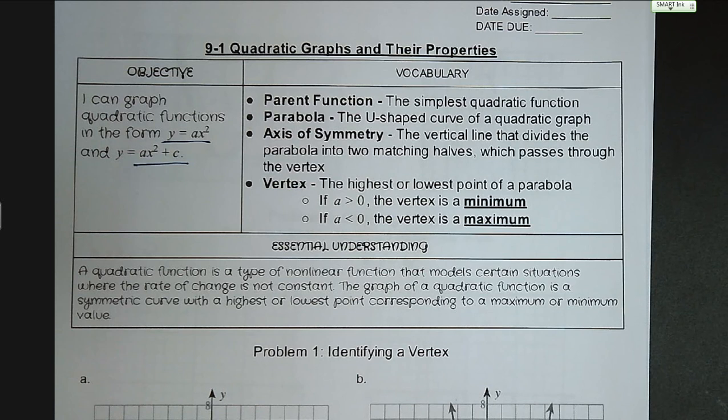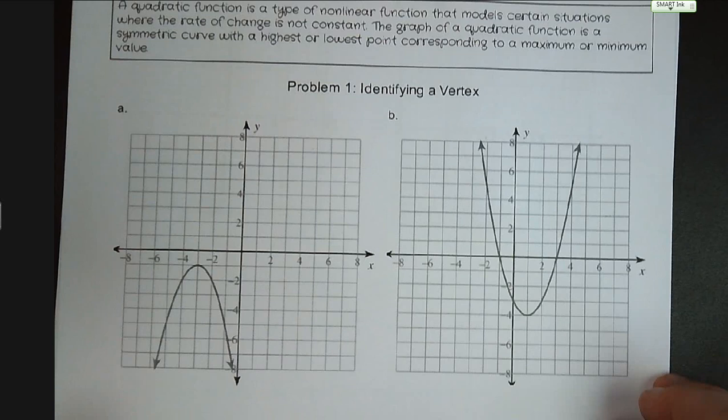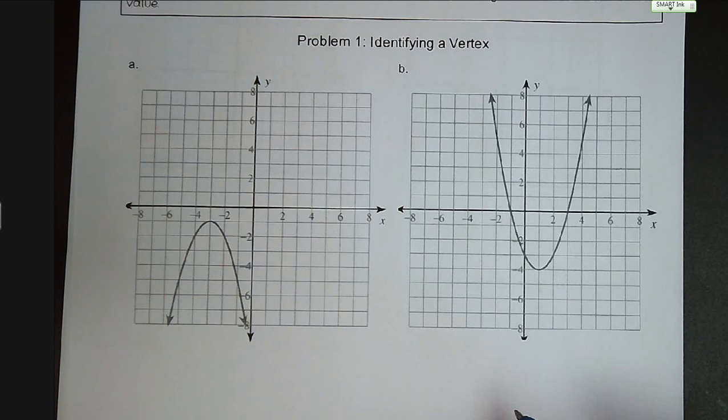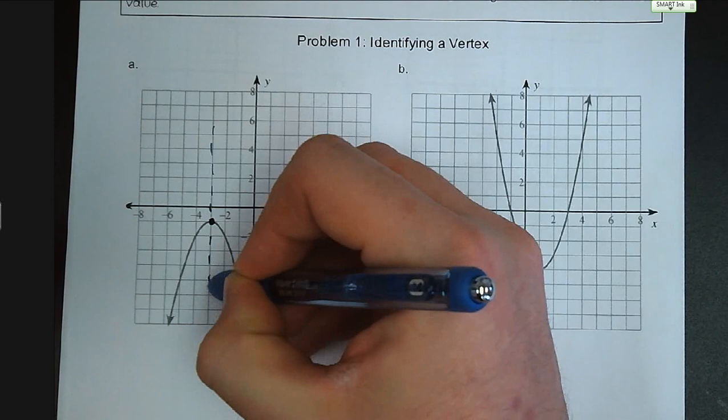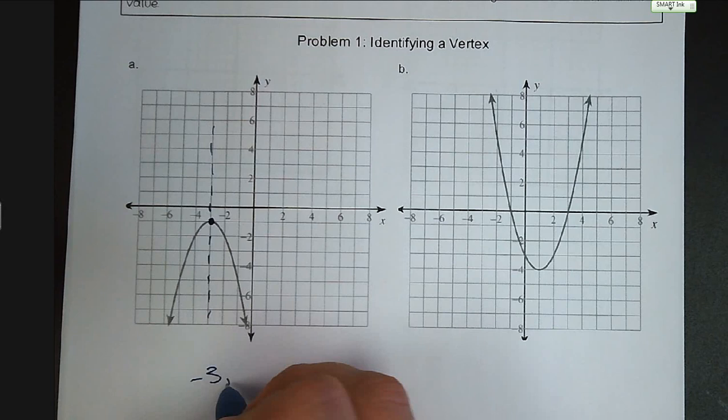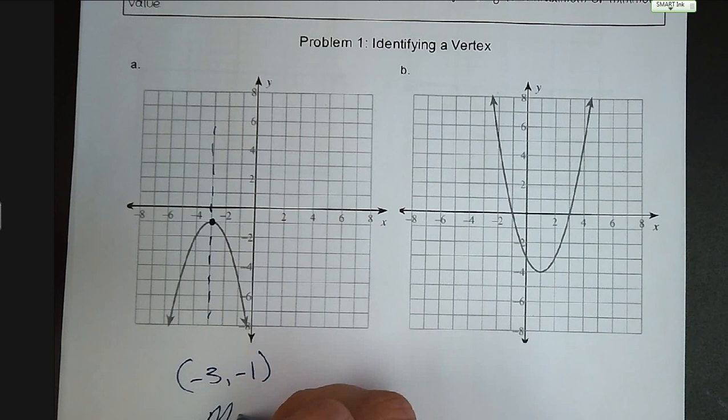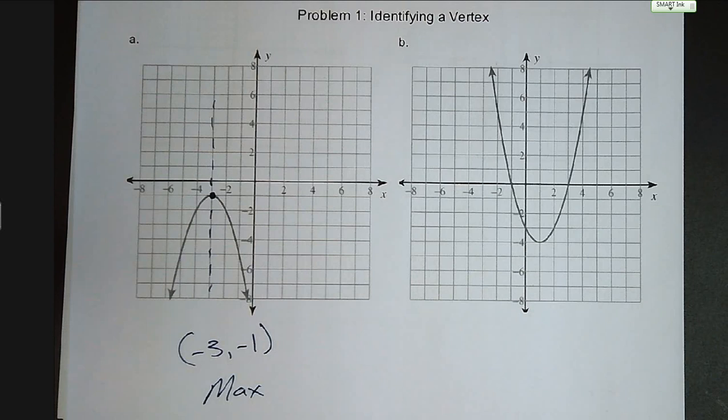Problem number one is identifying a vertex — we're looking for the maximum or minimum point. In letter A, it's going to be where the graph goes from going up to going down. Mr. Wolf marked the point there. There's our axis of symmetry, so we can see that each side is symmetrical, and our ordered pair is negative 3, negative 1. And that is a maximum — it is the highest point on that curve.